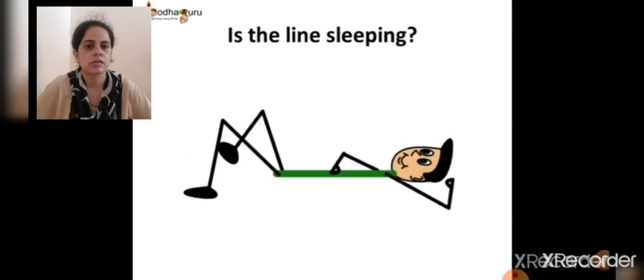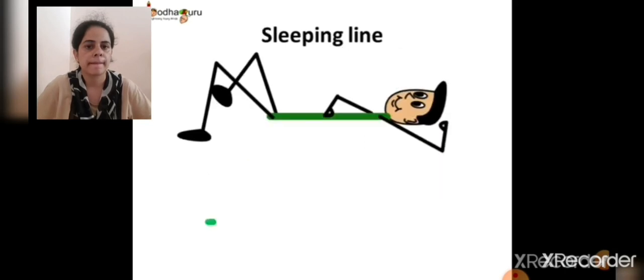Where did the water disappear? Where is the lake? Can we make the lake? Yes — see, the lake is ready now. The boat can sail and even the duck can swim. How did we draw the water in the lake? It is again a line, but the line is not standing now. See here — this looks as if the line is sleeping.